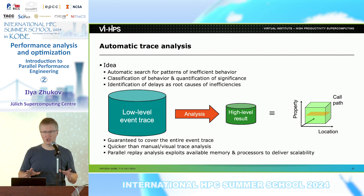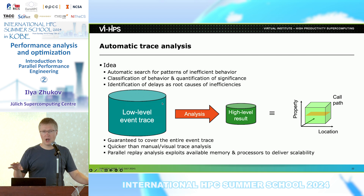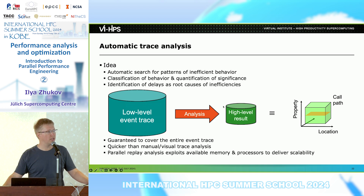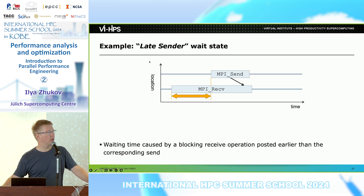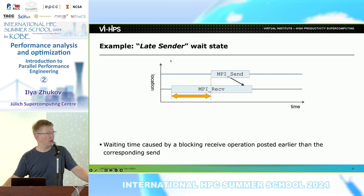What are the typical inefficiency patterns? Scalasca analyzes the low-level event traces automatically after your job has completed and collected all the traces. It automatically tests them and creates an additional report visible in CUBE. Here's a very typical example: the late sender pattern. We have a time axis and processes — process 0 has one MPI send, and on process 1 we have an MPI receive which was posted a little bit earlier than the MPI send. This time is considered to be waiting time, possibly because the load on process 0 is bigger than on process 1.